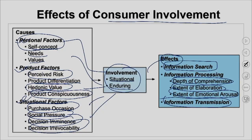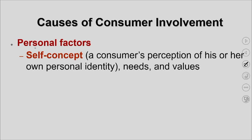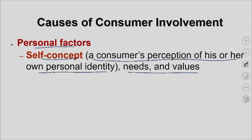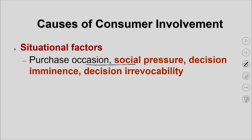Causes of consumer involvement — to summarize: personal factors are self-concept (a consumer's perception of their personal identity), needs, and values. Product factors are perceived risk, perceived differentiation, hedonic values, and product conspicuousness. Situational factors include social pressure, decision imminence, and decision irrevocability.